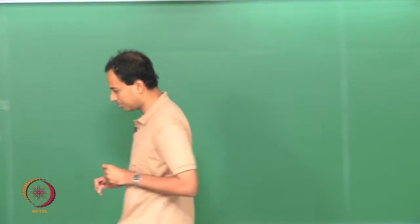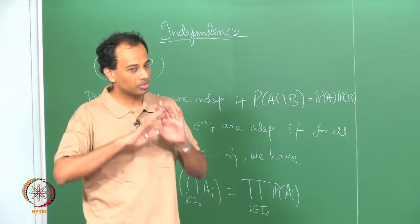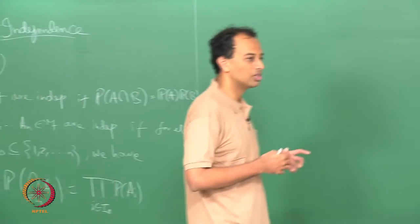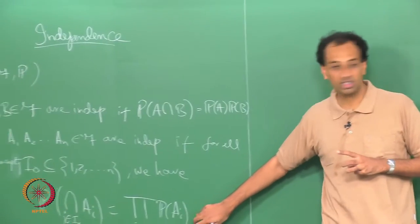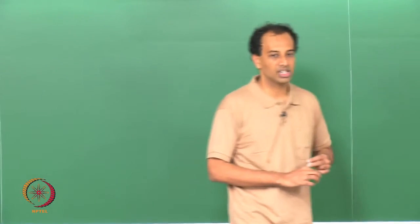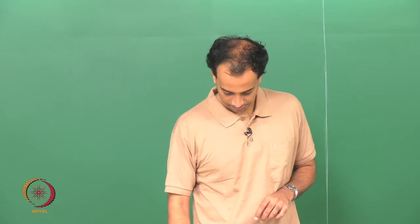You can create examples of 3 events which are all pairwise independent — A_1 and A_2 independent, A_2 and A_3 independent, A_3 and A_1 independent — but they may not all be mutually independent. You can also create examples where P(A_1 ∩ A_2 ∩ A_3) factors out, but one of the pairs does not. All 2^n - n - 1 equations must hold in order to assert that n events are independent. This is something you would have seen, at least for 3 events.